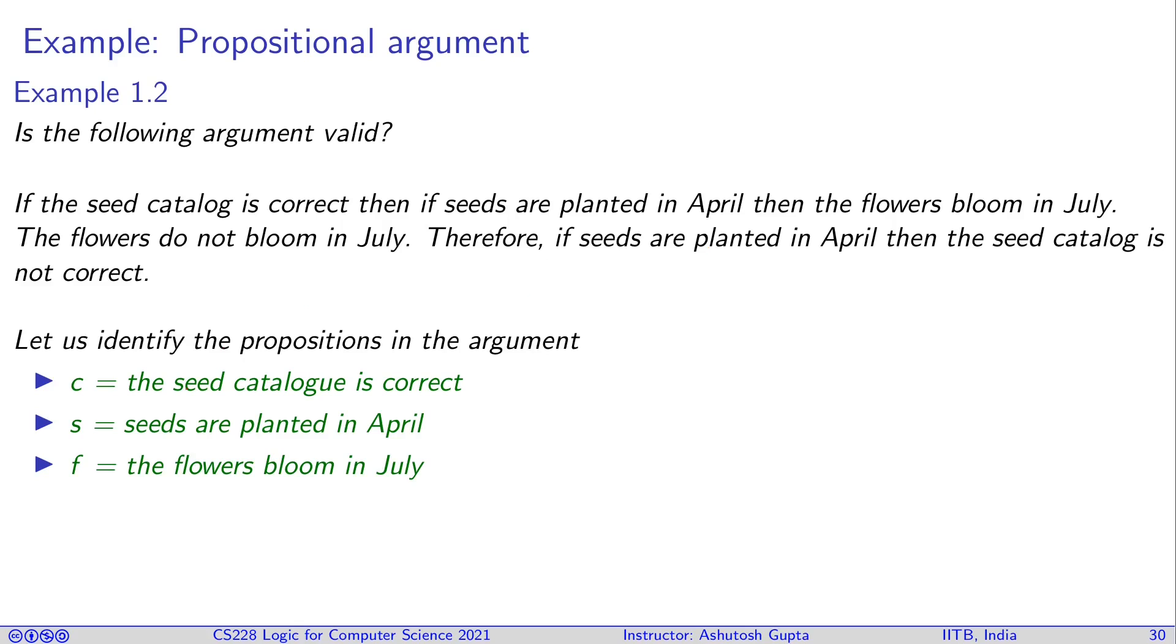So there are three propositions. One proposition says the seed catalog is correct, c. Second proposition, the seeds are planted in April, s. And the third proposition is the flowers bloom in July, f. You can see that in the whole of the argument there is no other proposition that is mentioned.